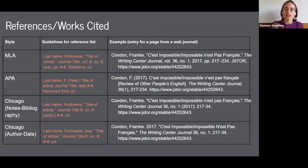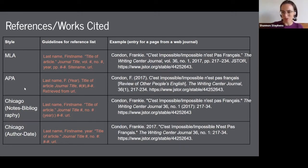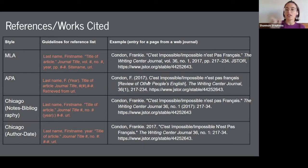Even experts look things up. If a student brought me a citation starting with 'Condon, F., 2017' and their professor wanted MLA style, I'd recognize from the year appearing early that it looks like APA — and I'd look it up to confirm and correct it. Having literacy in citation patterns lets you catch your own mistakes before turning in a paper. It's important to do a dedicated proofreading pass just for citations to ensure you're consistently working within the assigned style.